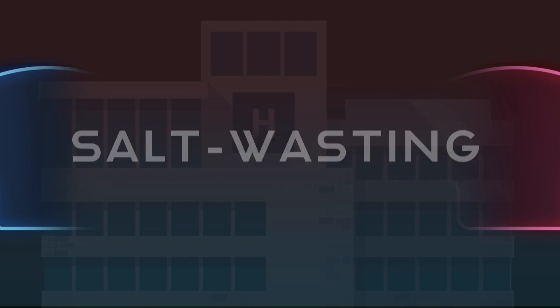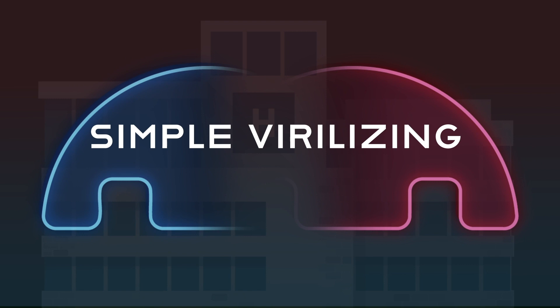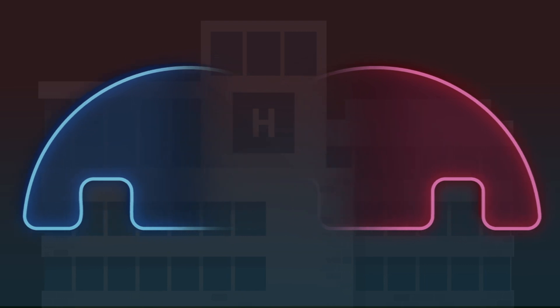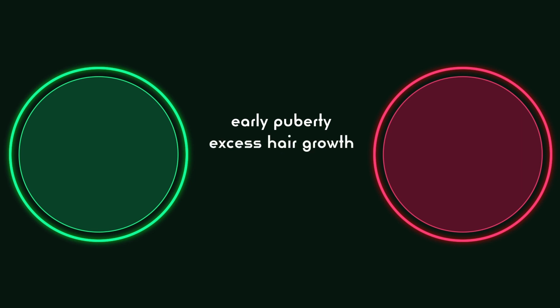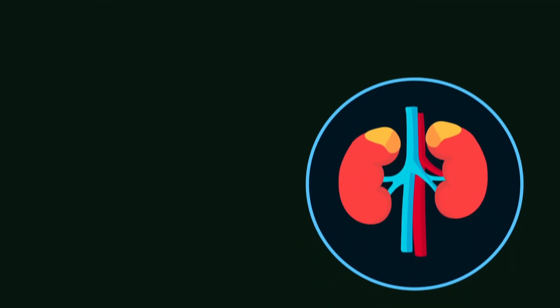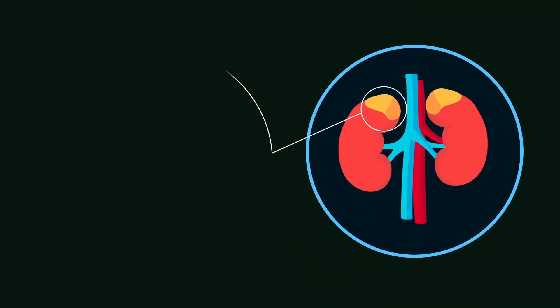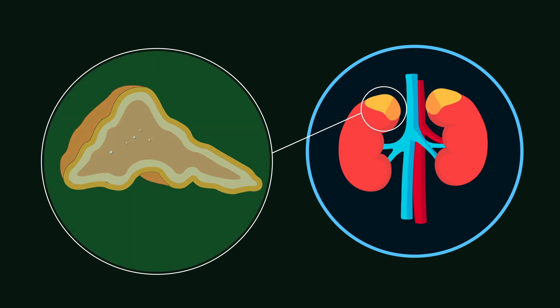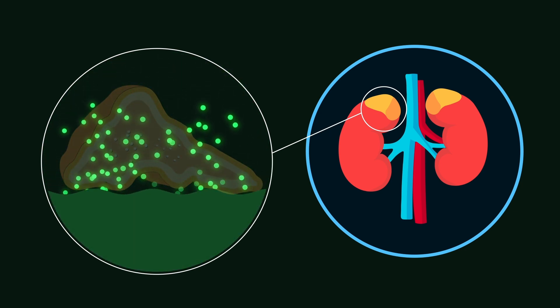On the other hand, for babies with the simple virilizing form, the genitals are affected, but salt levels remain stable. Later in life, both males and females with CAH may experience early puberty, excess hair growth, acne, shorter-than-average adult height, irregular periods for females, and testicular enlargement and testicular tumors in males. Lifelong hormone replacement therapy is needed to treat adrenal insufficiency and to decrease androgen production, so that typical growth and puberty can proceed.